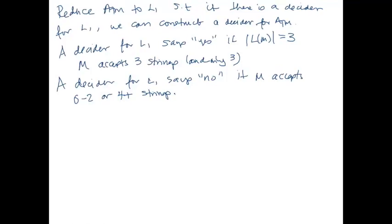We're not asking how many strings M accepts — that's not ATM. ATM is the problem: does M accept W? So the proof idea was to construct another machine that accepts exactly three strings if and only if M accepts W.